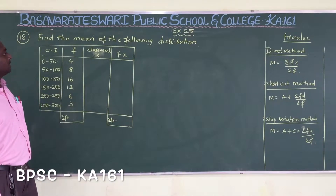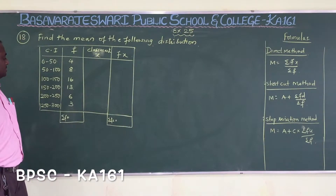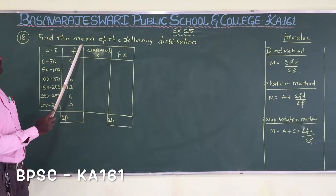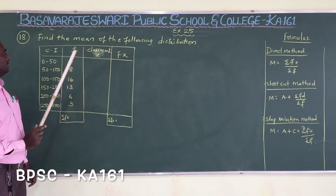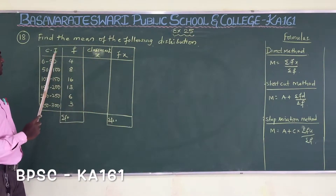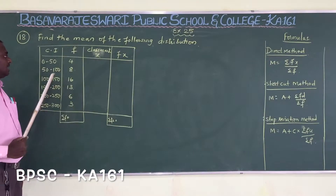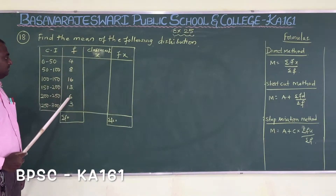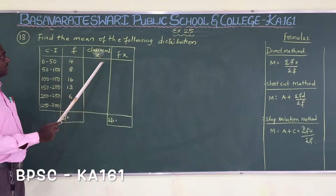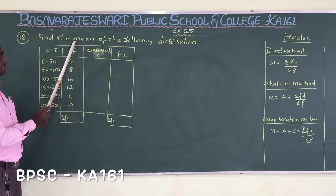Now we will move on to question number 18 of exercise 25. Find the mean of the following distribution. Here class intervals are given and frequency is given, so we have to find out the mean.